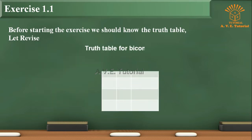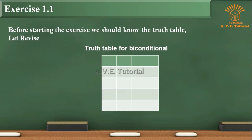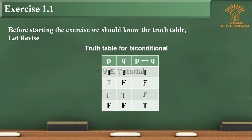Truth Table for Biconditional. First row: P, Q, P biconditional Q. Second row: T, T, T. Third row: T, F, F. Fourth row: F, T, F. Fifth row: F, F, T.